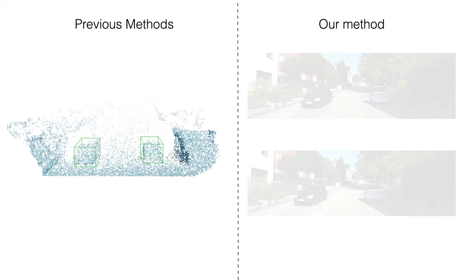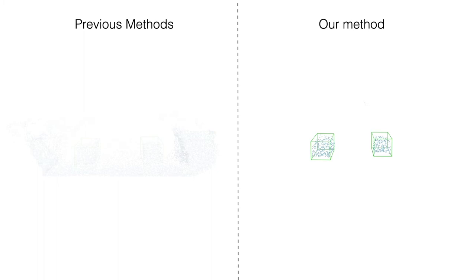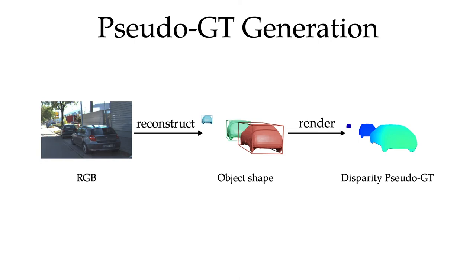In contrast, we design an instance disparity estimation network that predicts disparity only for pixels on objects of interest and learns a category-specific shape prior for more accurate disparity estimation. To address the challenge from scarcity of disparity annotation, we propose to use a statistical shape model to generate dense disparity pseudo-ground truth without the need of LiDAR point clouds, which makes our system more widely applicable.